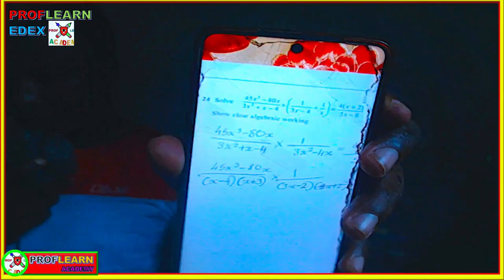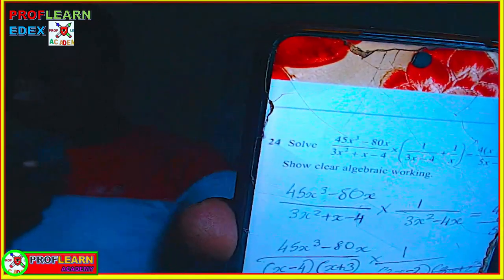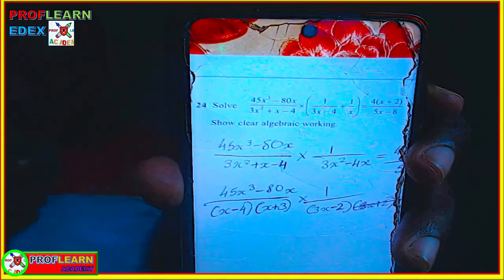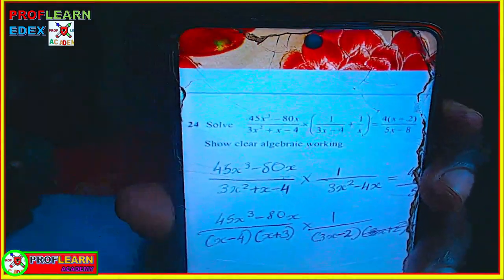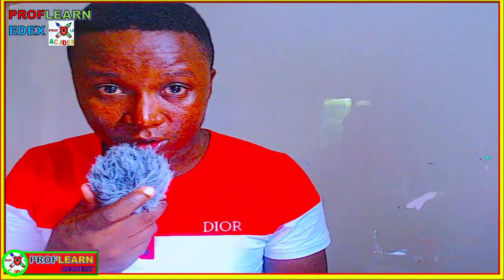We have an algebraic fraction question that we are supposed to solve. It's actually a very long algebraic equation, and I would like us to try to work through it and see exactly how you are supposed to approach this. Let me just take a second to write it out and see exactly what we are expected to do in this kind of question.